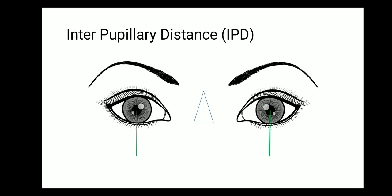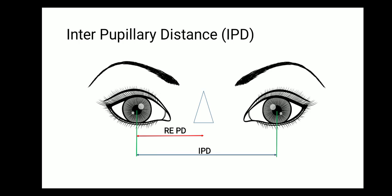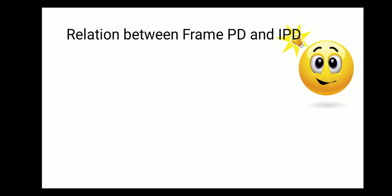Moving along, let's get into IPD. The distance between the pupils of both eyes is your interpupillary distance. The distance from the right eye to the center of the nose is your right IPD, and from the left eye to the center of the nose is your left IPD. Right IPD and left IPD are not always the same — in this example, the red line shows the right IPD is smaller compared to the left IPD shown by the brown line.